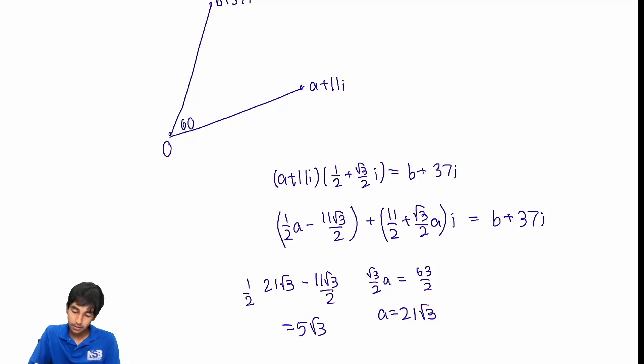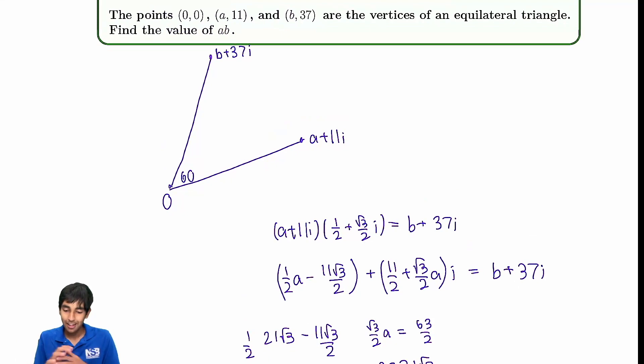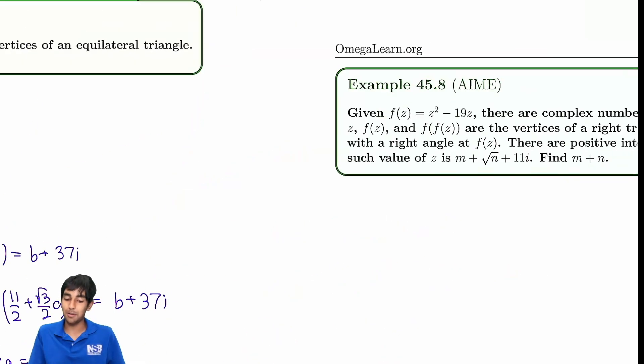So our product is just 105 times 3, which is 315. So yeah, we're done. That's literally it. That was such a cool solution, wasn't it? We multiplied by 60 degrees in the complex plane and that gave us a brilliant solution. Just an absolutely brilliant problem.